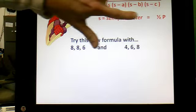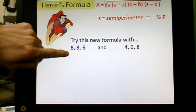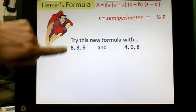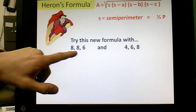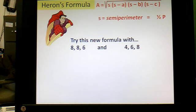So, there's the formula. You know, pause if you need to. Write it down. And then try it with this set of side lengths from the previous problem. So, there's A, there's B, there's C. The perimeter would be 8 plus 8 plus 6, which is 22. The semi-perimeter would be half of that, or 11.